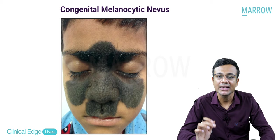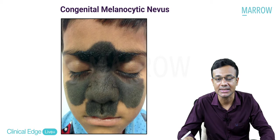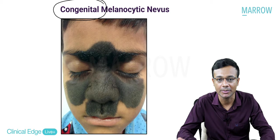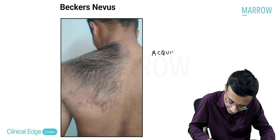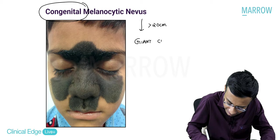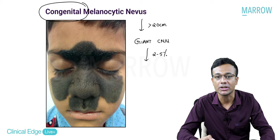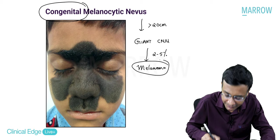Congenital melanocytic nevus is a benign proliferation of nevus-type melanocytes. The key distinction from Becker's is that congenital melanocytic nevus is congenital - seen since birth - whereas Becker's is acquired. If the size is more than 20 cm, it is called giant congenital melanocytic nevus. These patients must be under surveillance as there is a 2-5% chance of developing melanoma in the future.